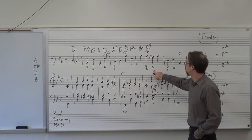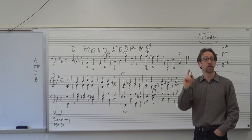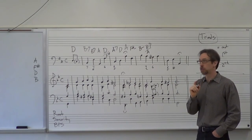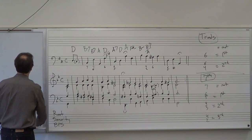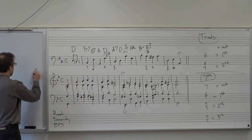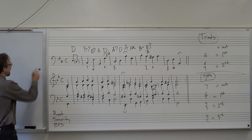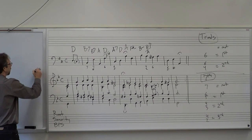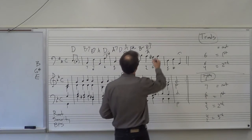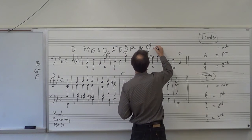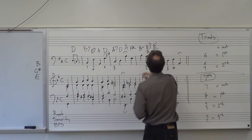Here I have a G sharp with a sixth written underneath it, meaning first inversion of a triad. I write down my G sharp — that's the third in my chord. I go down a third from there to E. So E, G sharp, B is my triad — that is a major triad. I write capital E over G sharp.